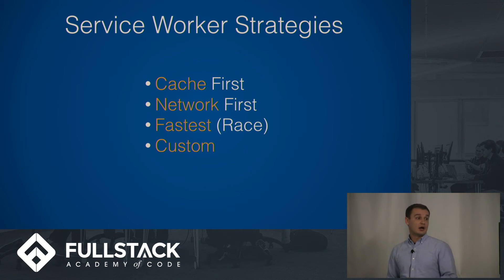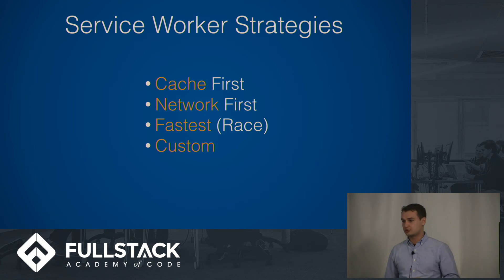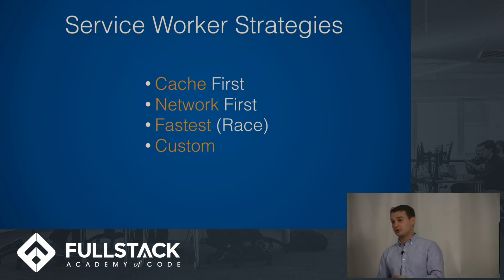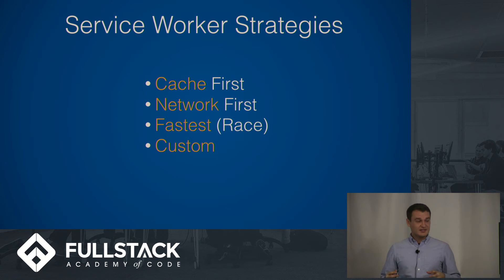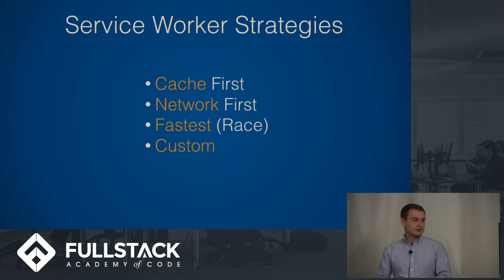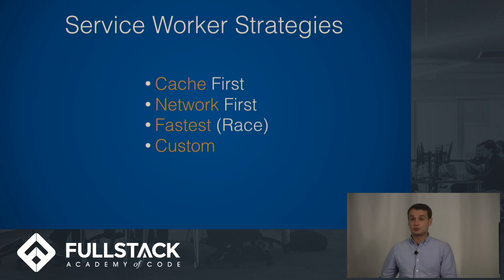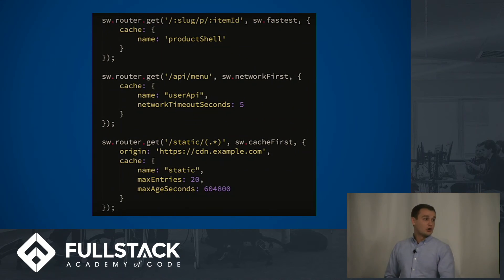Service workers allow you to use many different caching strategies. For example, cache-first: you go to the cache first, and if it's there you bring it, then go to the network. Network-first is the opposite. Then there's the race strategy — sometimes downloading from the network could be faster than taking from cache, especially on slow mobile phones. You can also customize the strategy however you want depending on your application's needs. There are some sample routes you can write for service workers available on the Google Developers website.